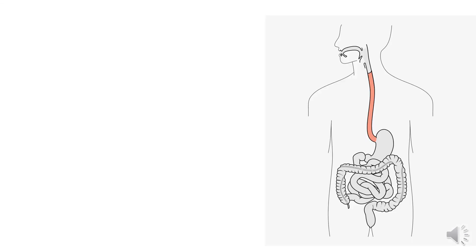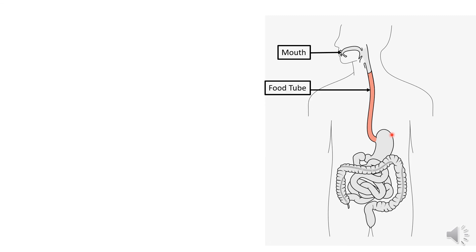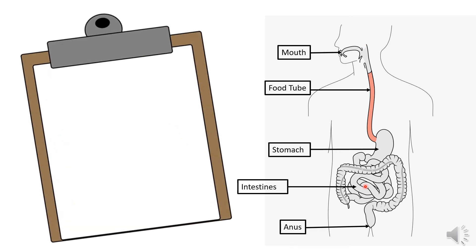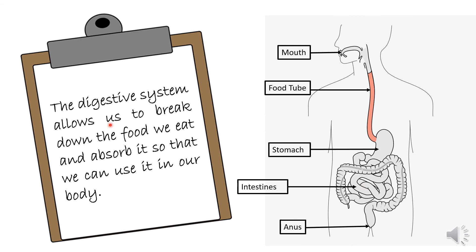This is our digestive system. Can you repeat it after me? The first organ is the mouth, then we have the food tube, then the stomach, the intestines, and finally the anus. This is our digestive system. We learned that the digestive system allows us to break down the food we eat and absorb it so that we can use it in our body.